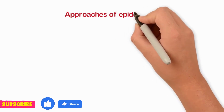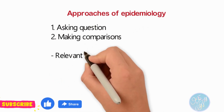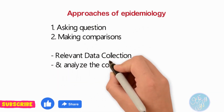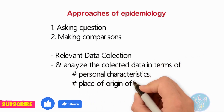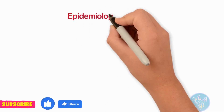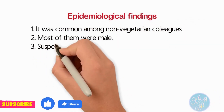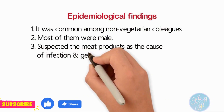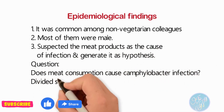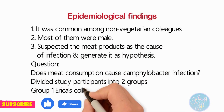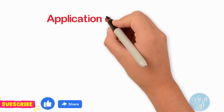Researchers were hired to identify the cause of this infection through epidemiological approaches. There are two epidemiological approaches: first, asking questions, and second, making comparisons. The researchers collected and analyzed the necessary data in terms of personal characteristics, place of origin of infected individuals, and time of disease onset. The infection was found to be common among non-vegetarian colleagues, most of whom were male. Based on this, they suspected meat products as the cause and generated a hypothesis: is meat consumption from the restaurant associated with Campylobacter infection? They divided colleagues into two groups — those with infection and those without — and made comparisons about the effects.